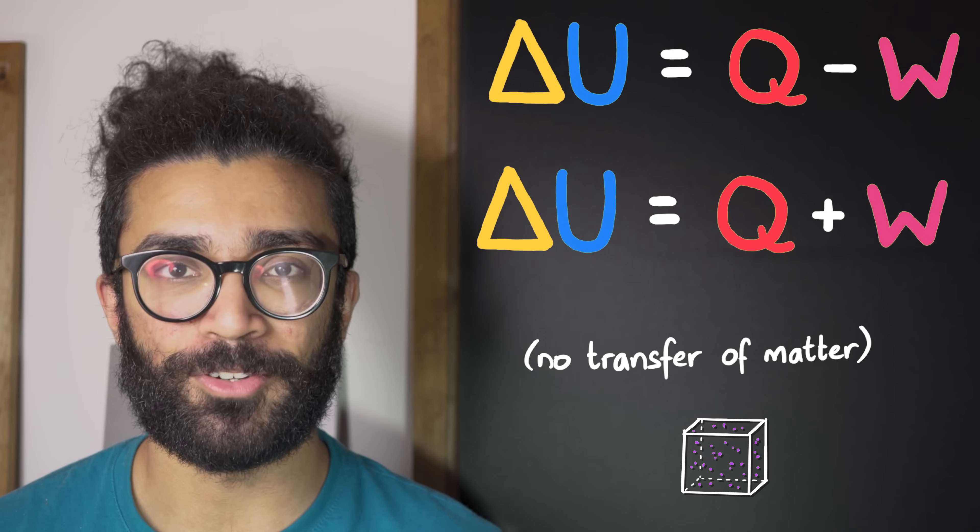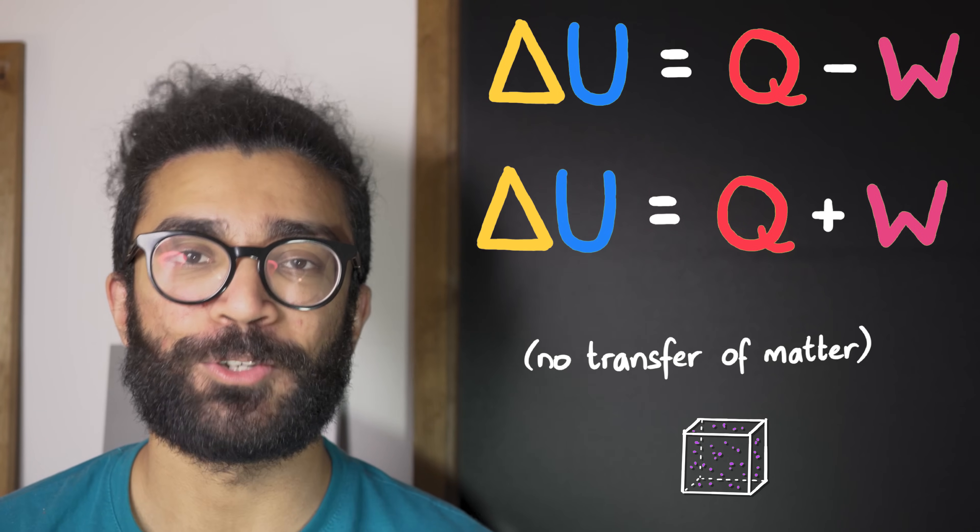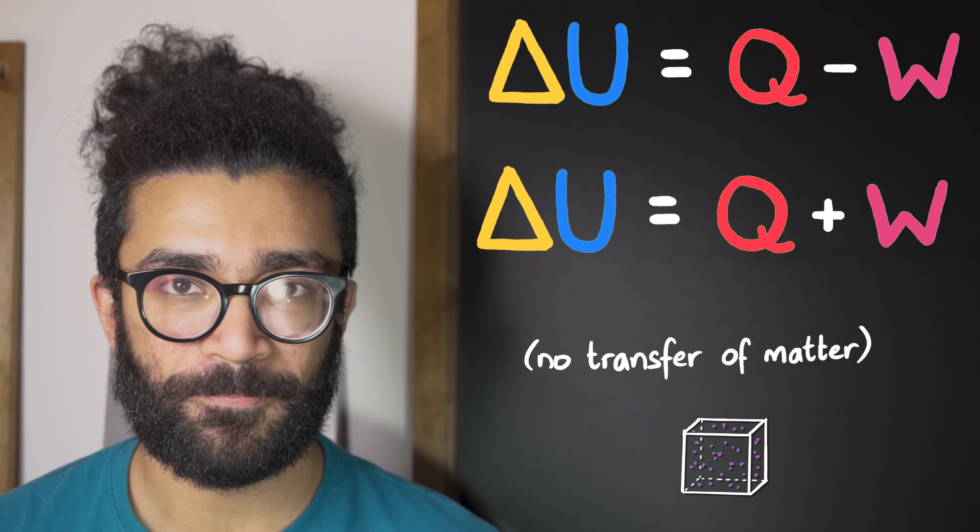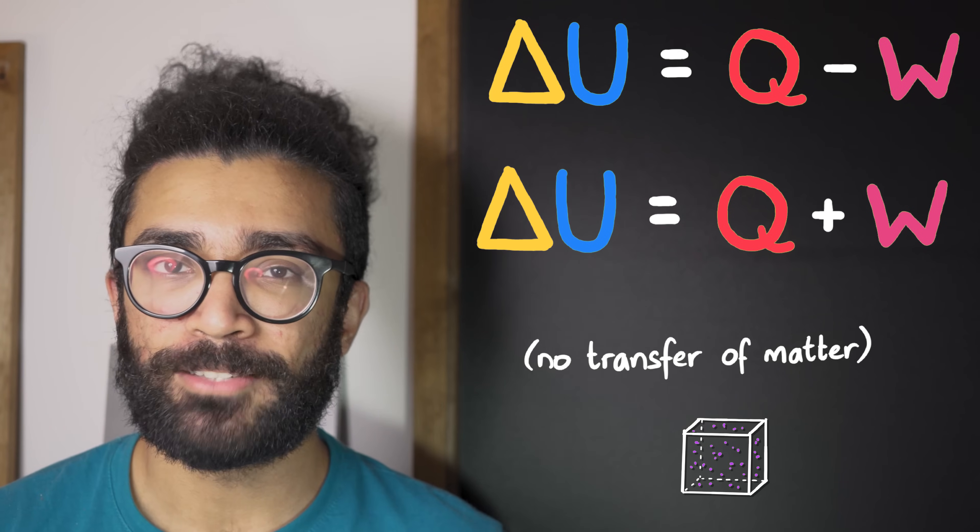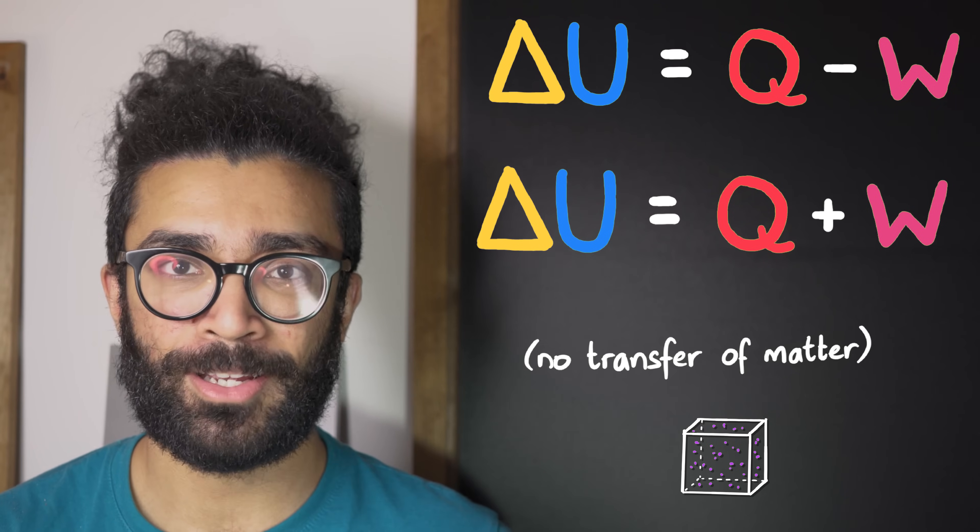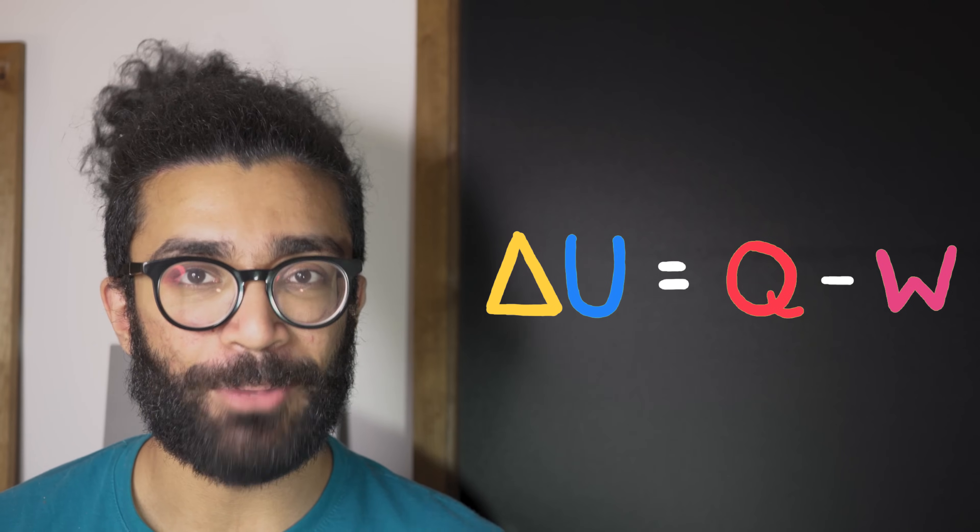then there could be some form of energy transfer with these particles, and we would have to include other terms in our first law equation in order for us to account for this type of energy transfer. Only then would our equation still be consistent with the law of conservation of energy. But the point is, I think the most commonly seen equation representing the first law of thermodynamics is this one here, and now we've seen what it actually represents in some basic detail.